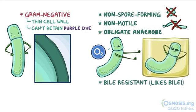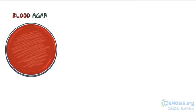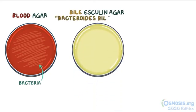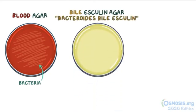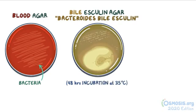Another fact is that it's bile-resistant and seems to like bile, which makes sense since it lives in the colon. So, not only can it grow anaerobically in blood agar, but it can also readily grow in bile esculin agar, also known as Bacteroides bile esculin. After 48 hours of incubation at 35 degrees Celsius, Bacteroides fragilis forms dark colonies with brown-black halos due to the hydrolysis of esculin.